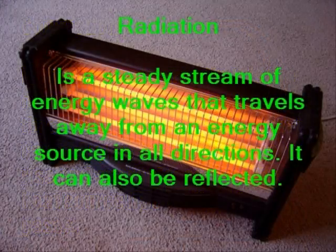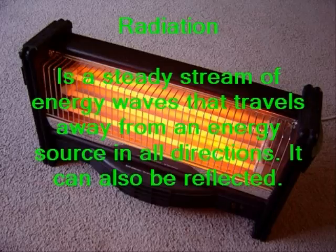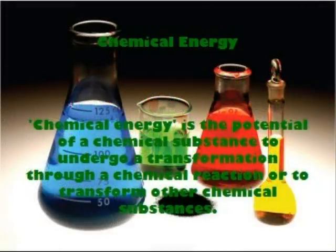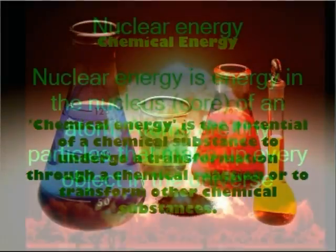Radiation is a steady stream of energy waves that travels away from an energy source in all directions. It can also be reflected. Chemical energy is the potential of a chemical substance to undergo a transformation through a chemical reaction or to transform other chemical substances.